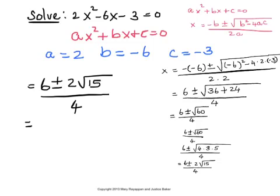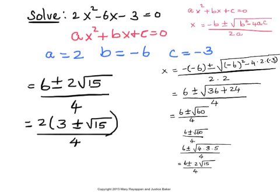Now, if you look at the numerator, we have 6 and 2 root 15, which reads as 2 times root 15. Now, there's a 2 common to both the terms, and we can factor that out, which will give 2 times 3 plus or minus root 15, all over 4. And now you can divide this 2 with the denominator, and get 2 in the denominator instead of 4.